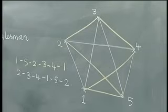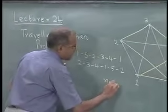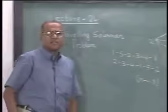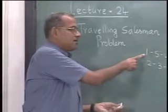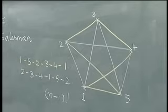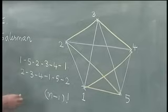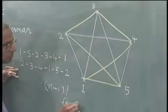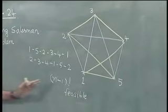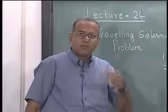From any node the person can start, but must visit every other node. If there are n nodes, there are (n-1)! feasible solutions, because each of the n! solutions has n solutions that repeat. We have (n-1)! feasible solutions to the traveling salesman problem, and the question is to find the one with the minimum distance value among these.